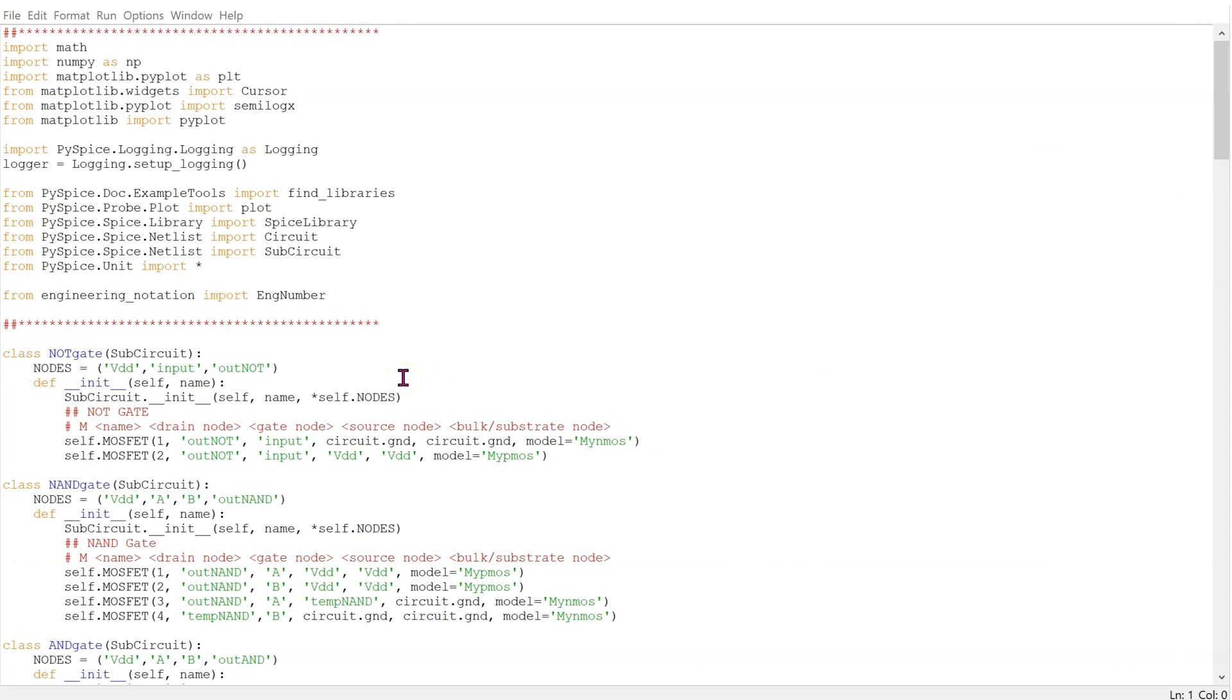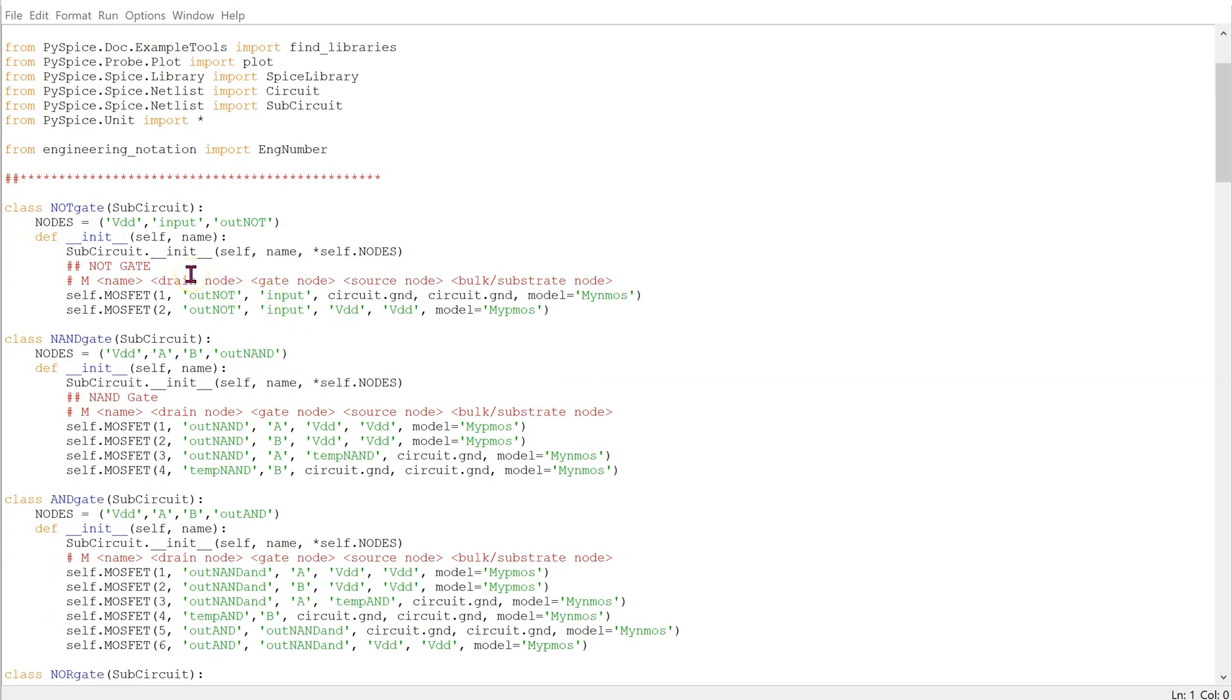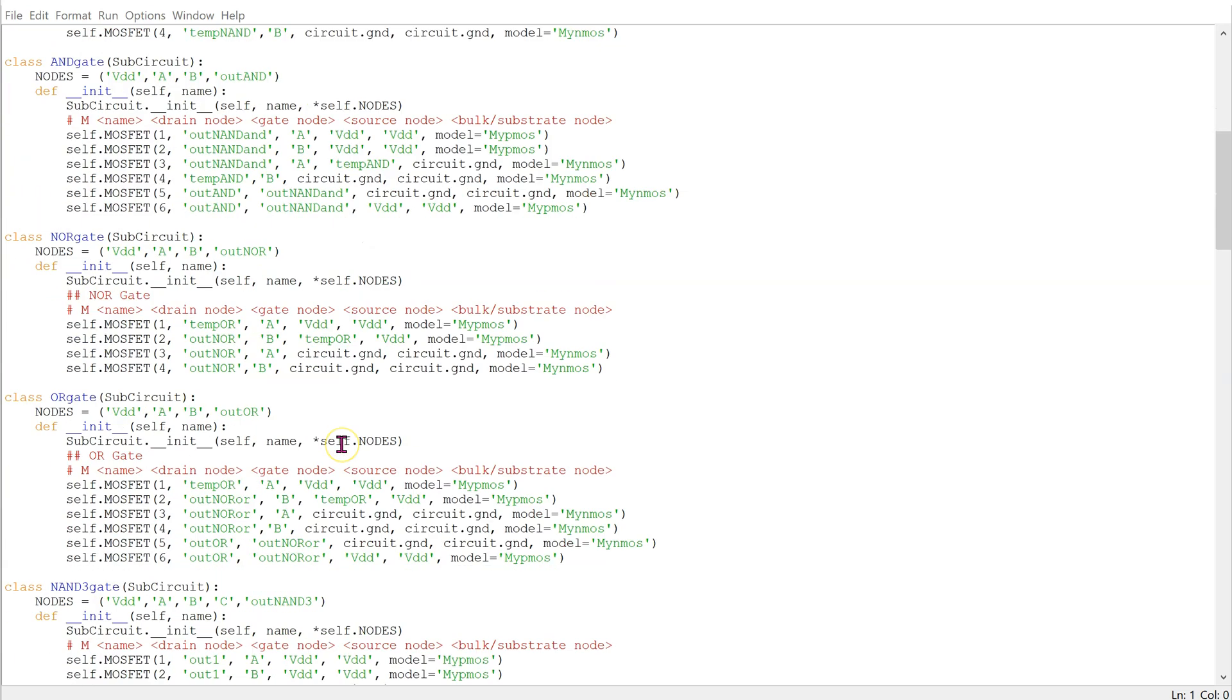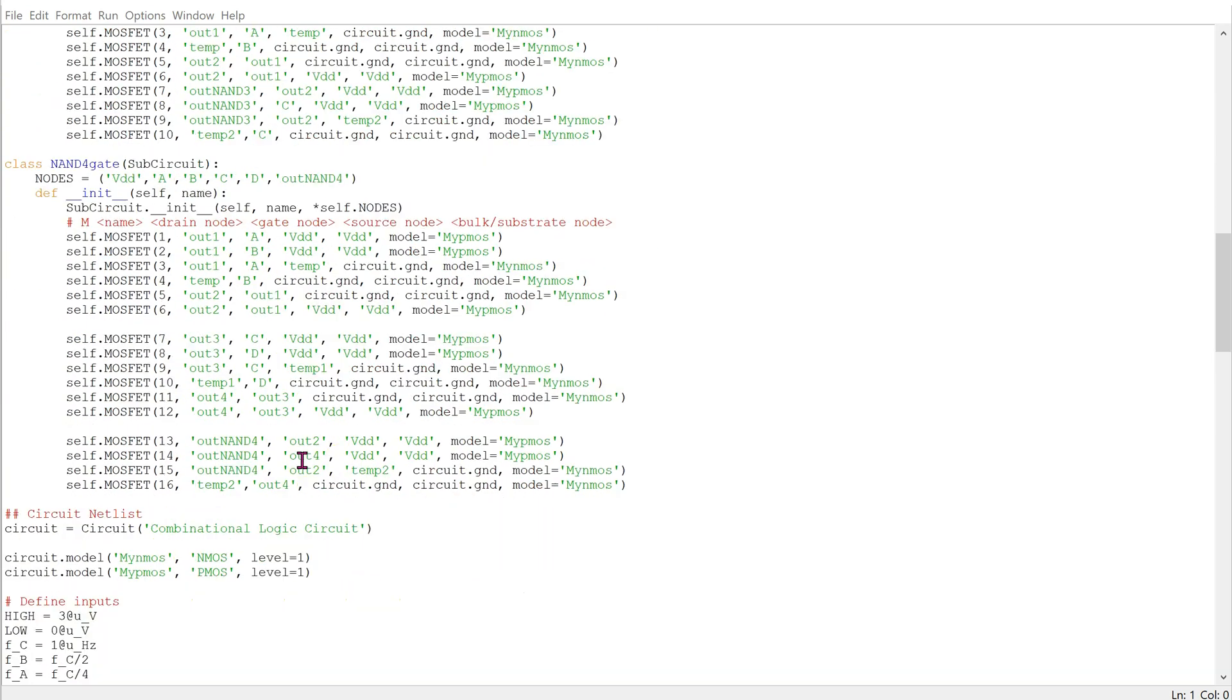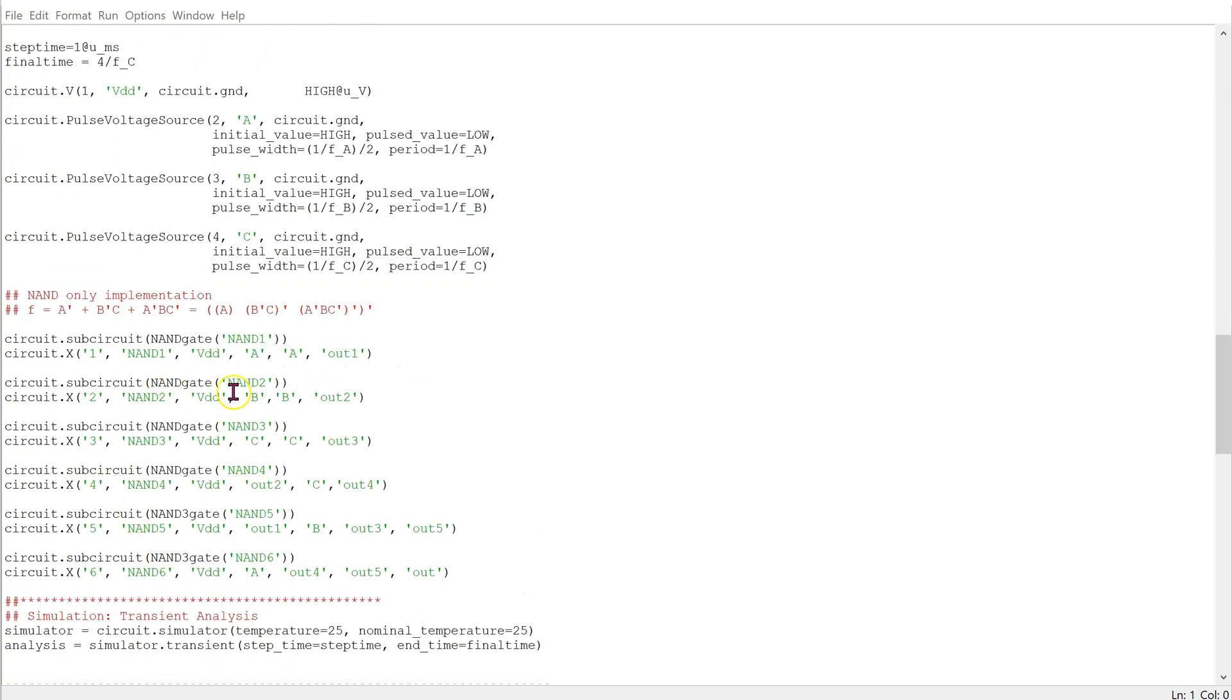Let us have a look at the example with three inputs. Notice that we have imported sub-circuit. We define the basic logic gates as sub-circuit. Using these sub-circuits, we can then define the circuit netlist for a NAND only implementation.